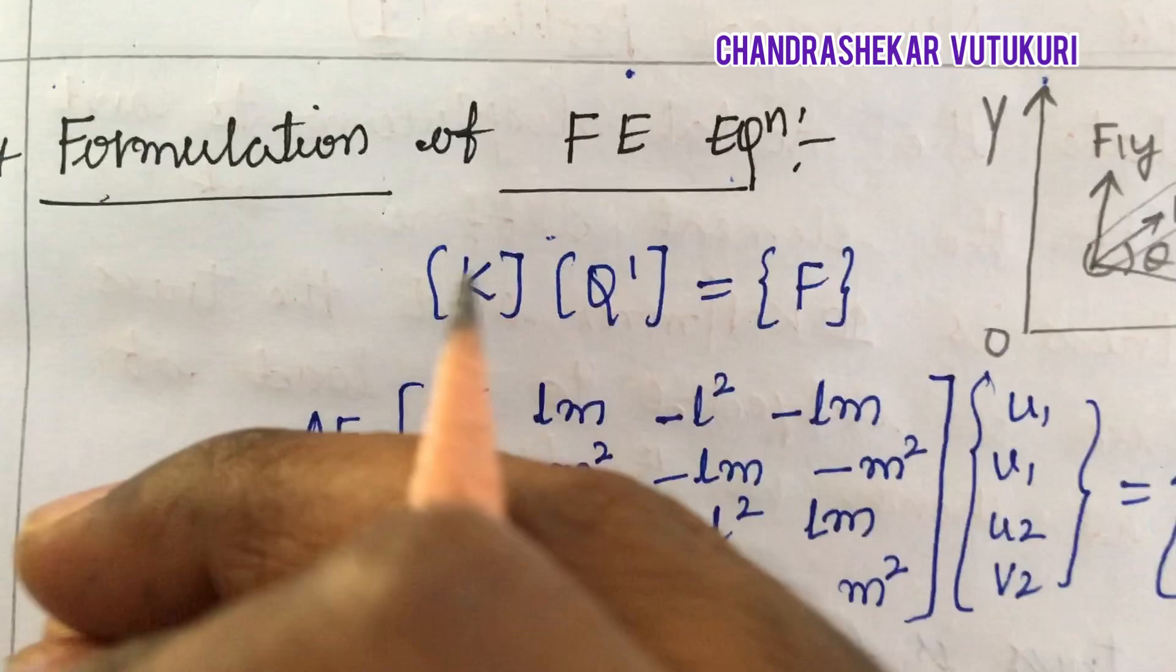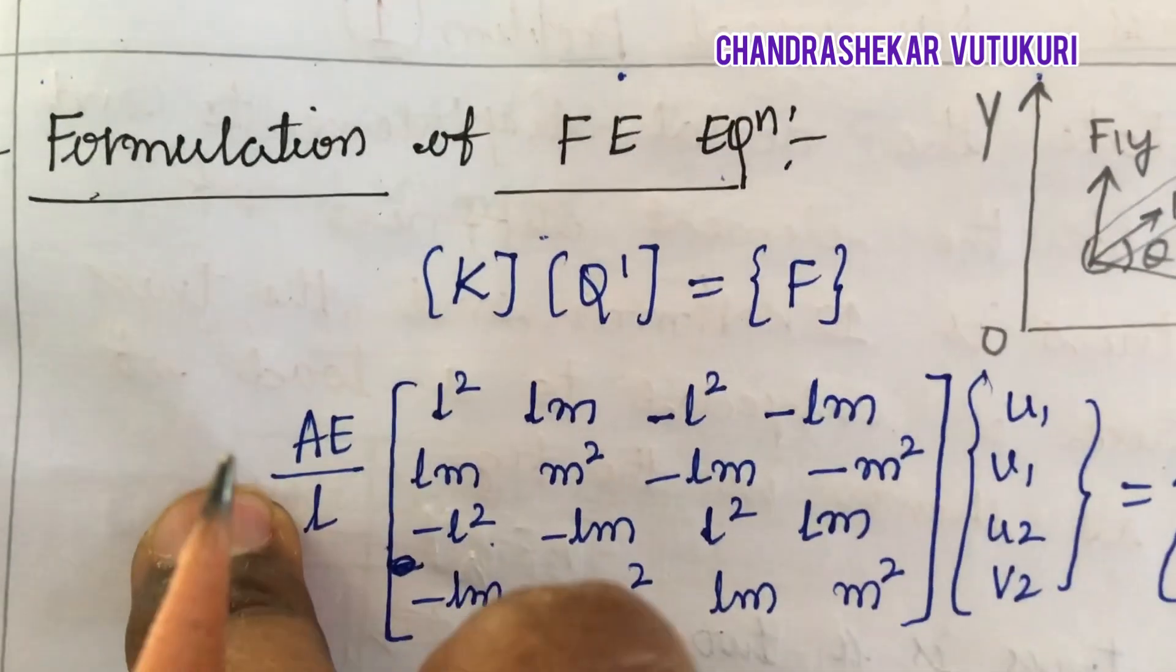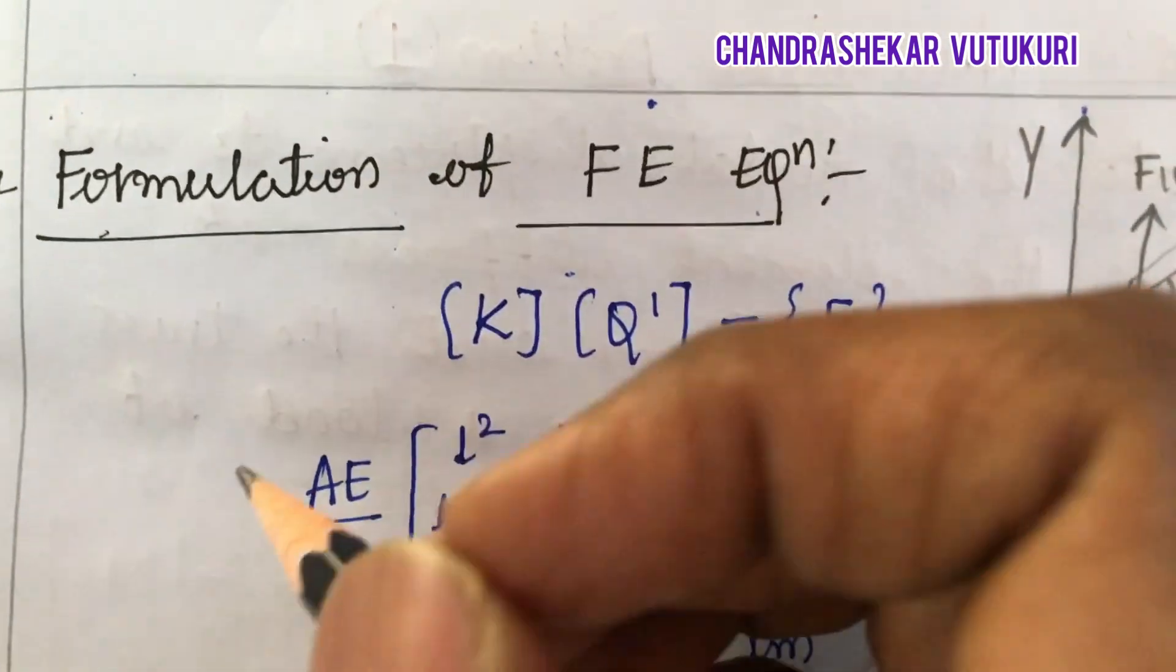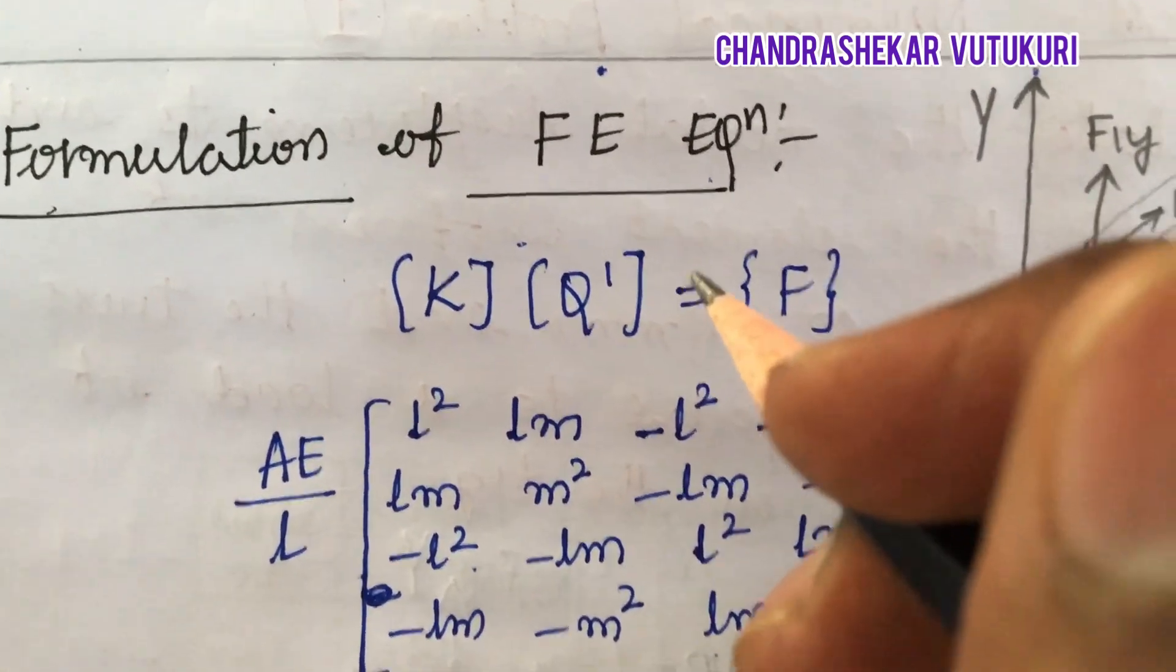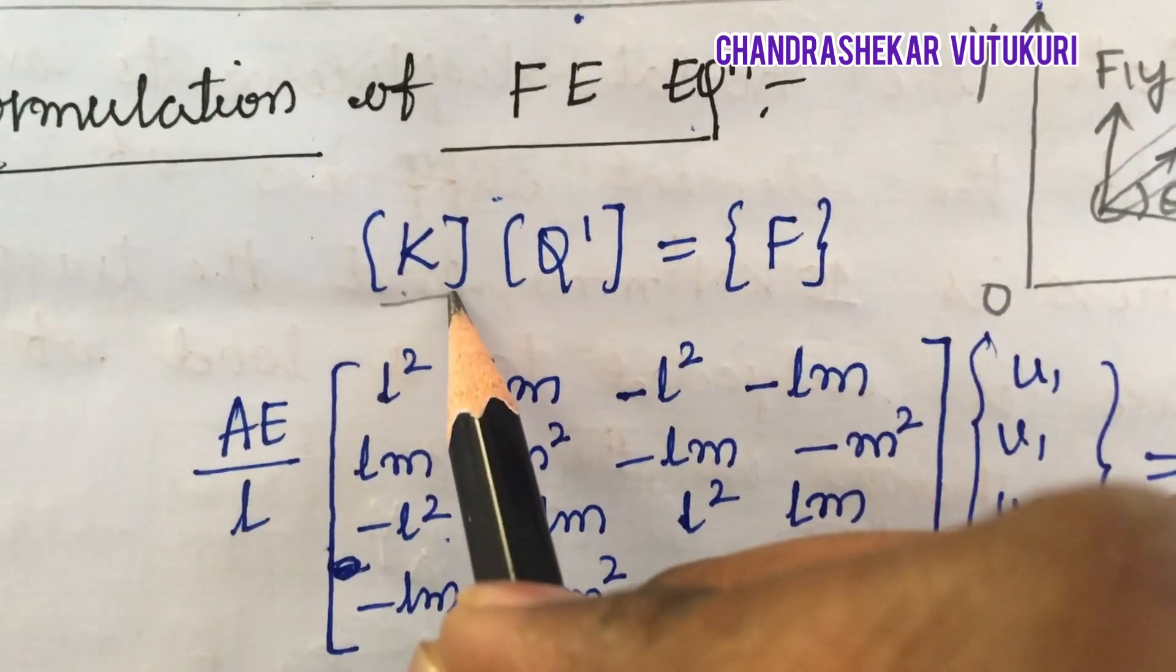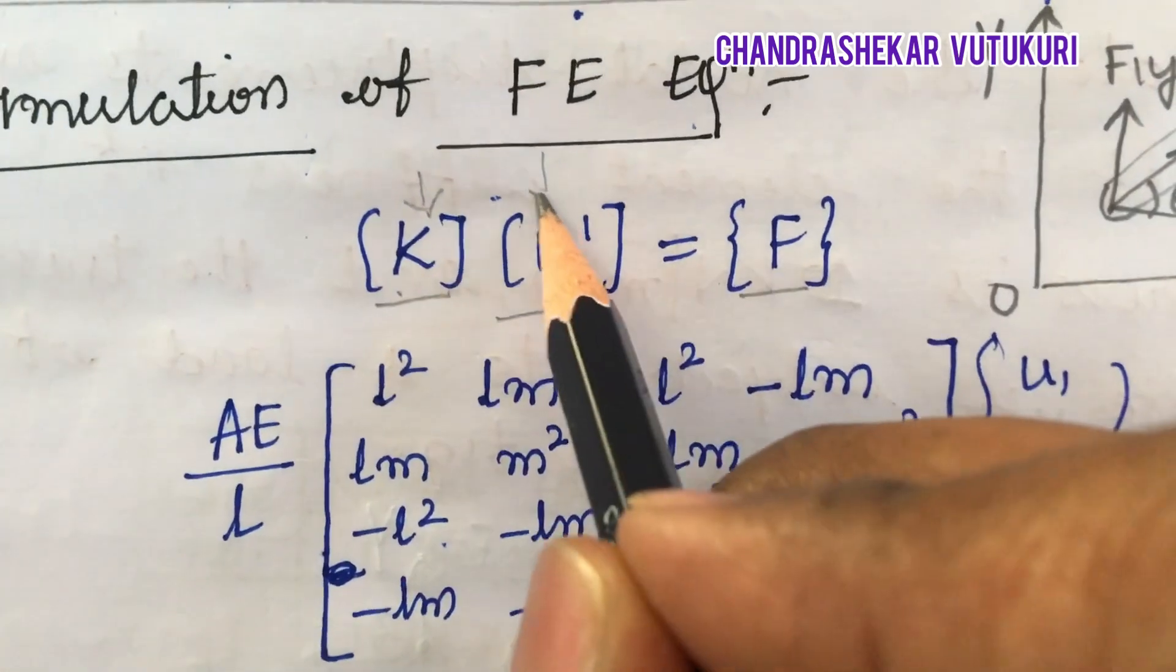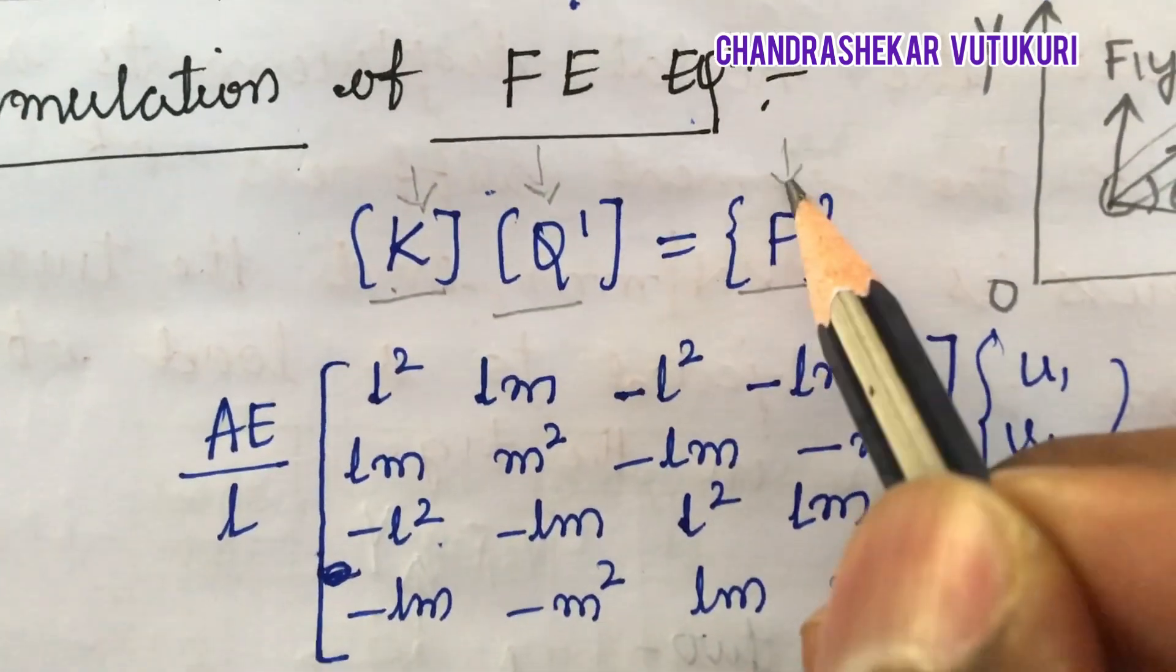In the last video, after the stiffness matrix, I will show you this video. The stiffness matrix is given as what, dear students? We know that the finite element equation is KQ equals to F, where K is the stiffness matrix, Q is the displacement and F is the load vector.